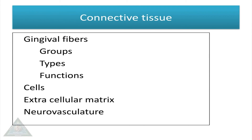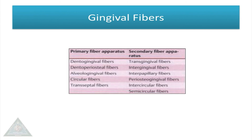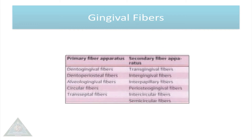The gingival connective tissue comprises 65 percent gingival fibers, 5 percent cells, and 30 to 35 percent extracellular matrix with a neurovascular bundle. The gingival fibers are composed of dento-gingival fibers, dento-periosteal fibers, alveolo-gingival fibers, circular fibers, and transseptal fibers.